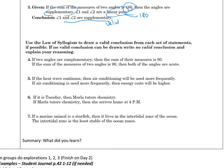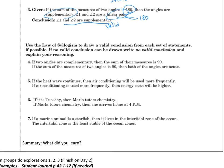Now a couple of these are going to get a little funky. Use the law of syllogism to draw a valid conclusion for each set of statements if possible. If no valid conclusion can be drawn, write no valid conclusion and explain your reasoning. If two angles are complementary, then the sum of their measures is 90. If the sum of the measures of two angles is 90, then both angles are acute. So this is P, this is Q, this is Q, this is R. Using the law of syllogism: if two angles are complementary, then both of the angles are acute. That is a valid conclusion.